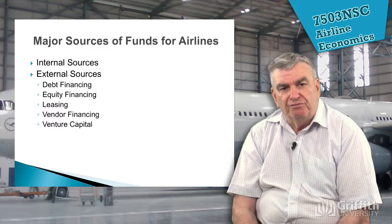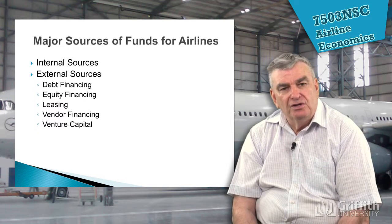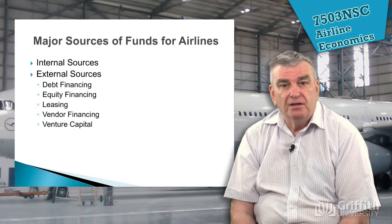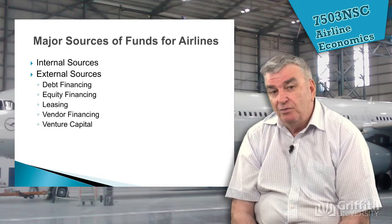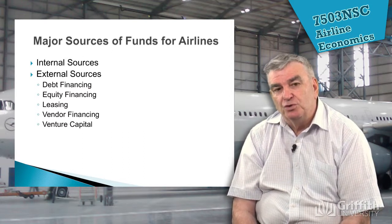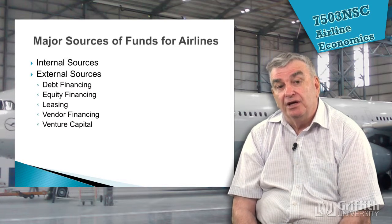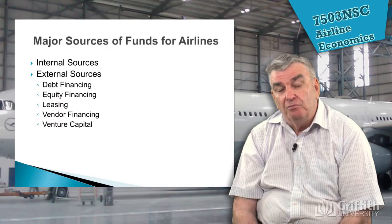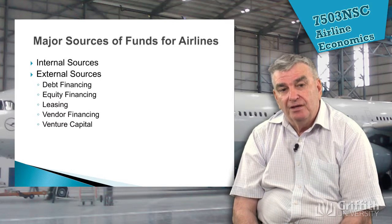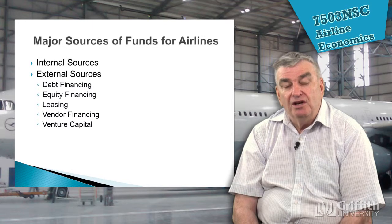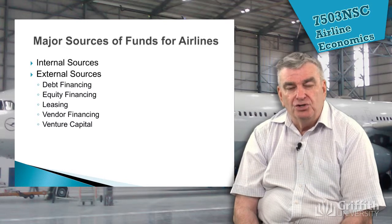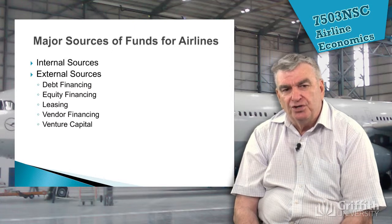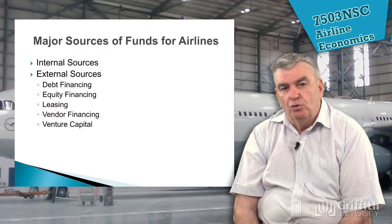We're going to examine the major sources of funds for airlines. Internal sources include profits — not much on an individual seat, but across a 400-seat aircraft that can add up to substantial amounts. Airlines are always putting money aside for the future. But if you're starting an airline, it takes a long time to build up profits, so external sources come in. We look at debt financing — borrowing money from a bank — and equity financing, going out to the public to buy shares in your airline.